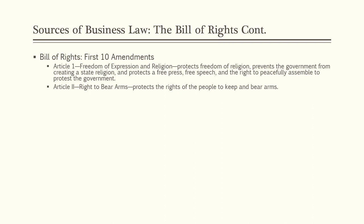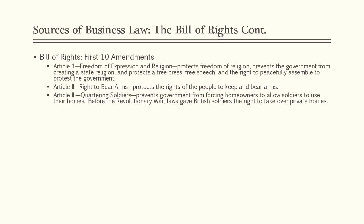The Second Amendment is the right to bear arms — protecting the right of the people to keep and bear arms. The constitutional text actually says militia, but the Second Amendment has been widely interpreted by the Supreme Court to include the individual's right to keep a firearm. The Third Amendment prevents governments from forcing homeowners to allow soldiers to use their homes. Before the Revolutionary War, laws gave British soldiers the right to take over private homes without compensation, actually forcing people out into the street.